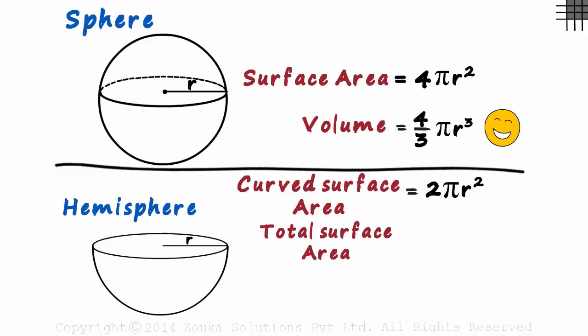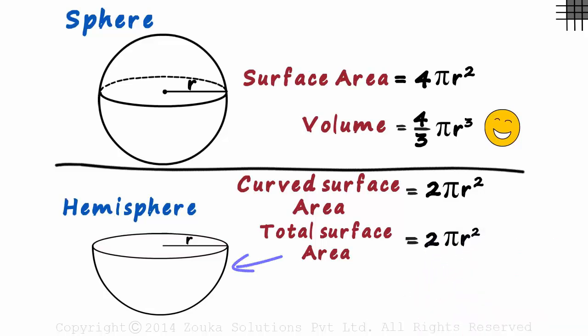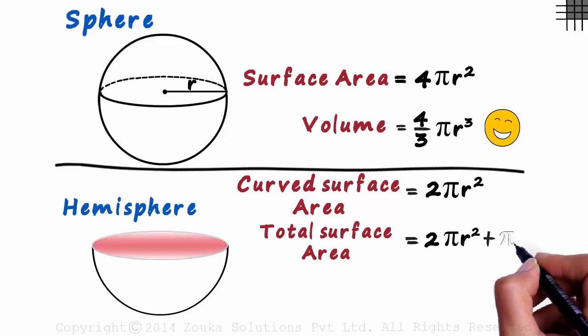We have figured the area of the curved surface to be 2πr². The area of the circle on top will be πr².